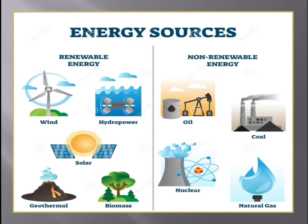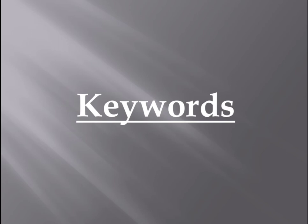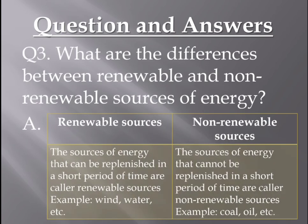This is our topic for today. I have given a few keywords in your daily schedule — please learn them, write them in your classwork, and underline them in your content book. You can also include any other words you find. Coming to your question answers: What is the difference between renewable and non-renewable sources? Sources which can be replenished by themselves in a short period of time are called renewable sources — for example wind, water, solar energy, biomass. Non-renewable sources are sources of energy which cannot be replenished in a short period of time — for example coal, oil, and natural gas.